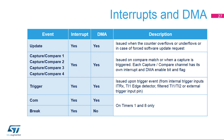Each of the four capture-compare events have their own interrupt and DMA. A trigger event on the TRGI input, regardless of the trigger source, can also trigger an interrupt or DMA request. Lastly, additional sources of interrupts and DMA requests are the commutation and break events on timers 1, 8, 15, 16, and 17 only. Note that the break event does not generate DMA requests.